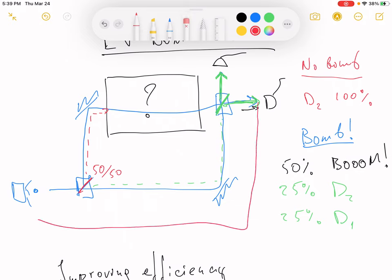And then we could make, I don't know, a hundred loops like that and then let the photon out if it still goes into detector 2. Then we are almost certain that there is no bomb.